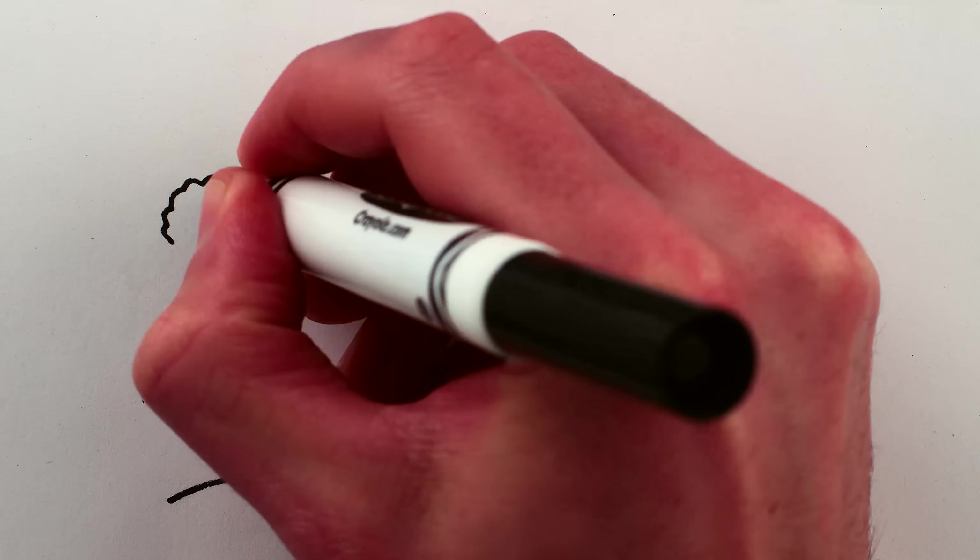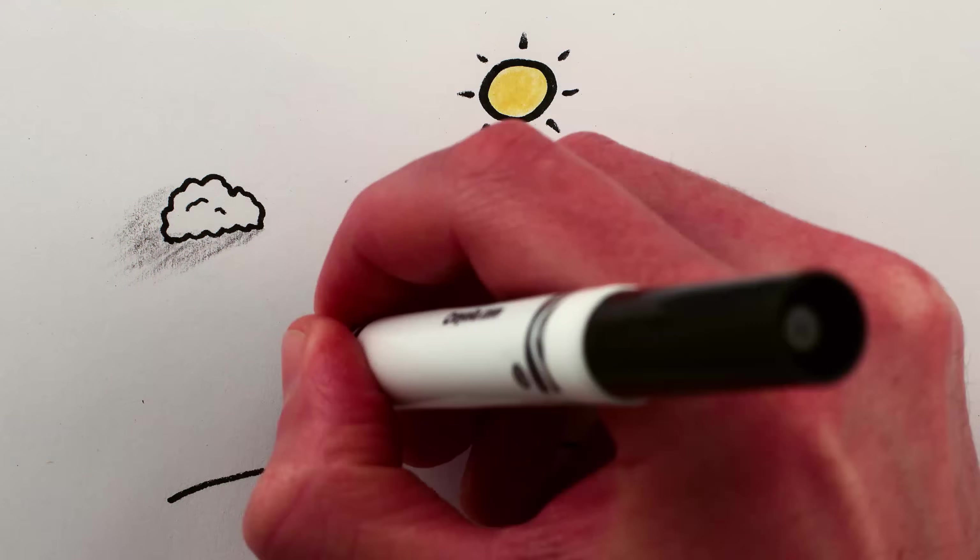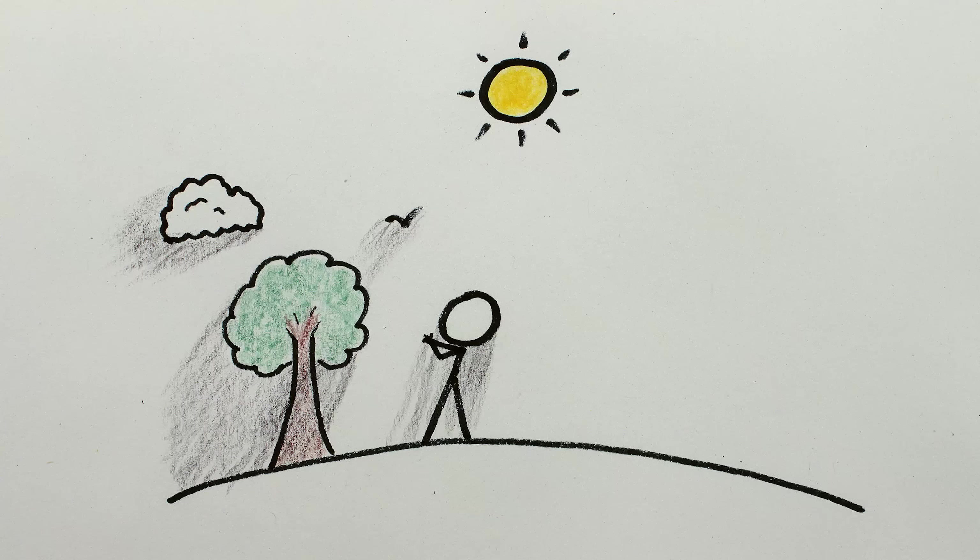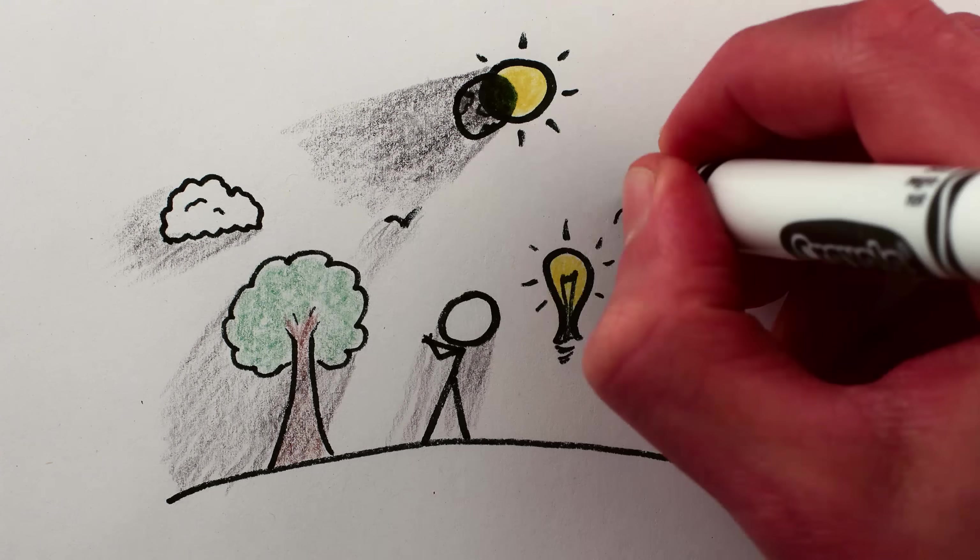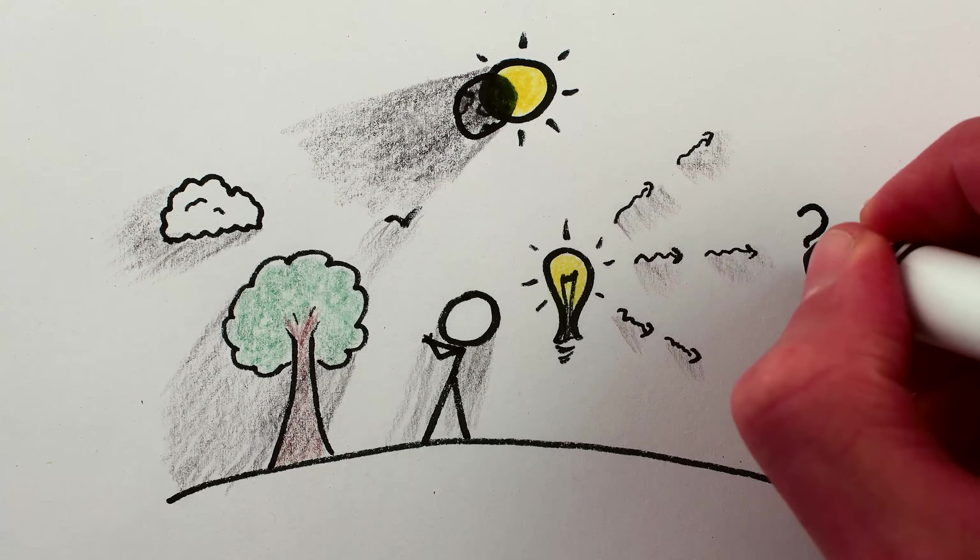There are plenty of objects that are good at blocking light and casting shadows. Clouds. Trees. Birds. People. The moon. But what about light itself? Can photons cast shadows?